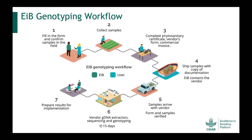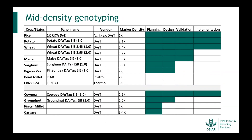This is the typical genotyping workflow — relevant whether it's low-density, high-density, or mid-density — which goes through the EIB genotyping workflow. The ICAR team is already familiar with this workflow from utilizing the KASP-based marker platform through the low-density genotyping service. Typically, you fill in the form, confirm the samples, collect them, complete the shipping formality, and the sample reaches the vendor. The vendor confirms the samples, proceeds with DNA extraction and sequencing or genotyping, and then prepares the results for implementation.